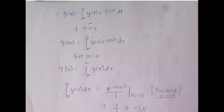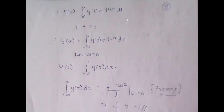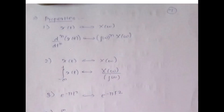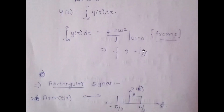The CTFT formula says: integral from minus infinity to infinity of y(t) e^(−jωt) dt = Y(ω). If we put ω = 0, we get Y(0) = integral from minus infinity to infinity of y(τ) dτ, which is exactly what the question asks for. We already have Y(ω), so we simply substitute ω = 0 to find the answer.